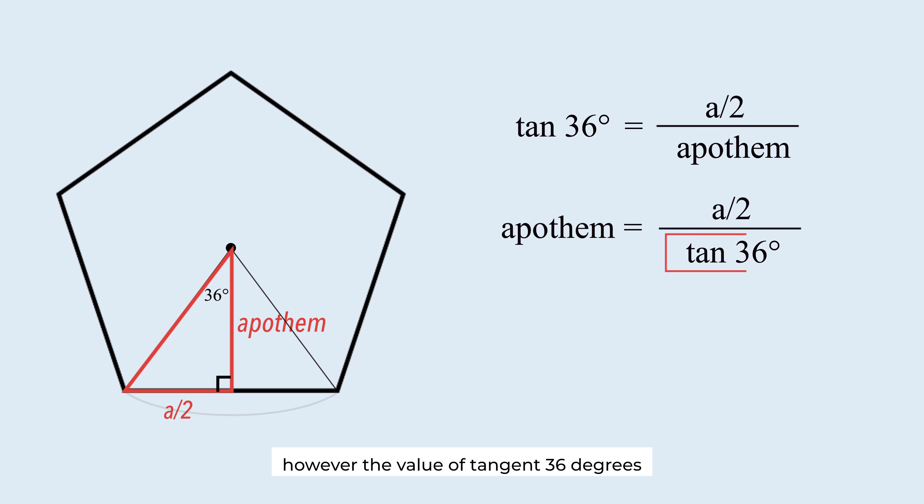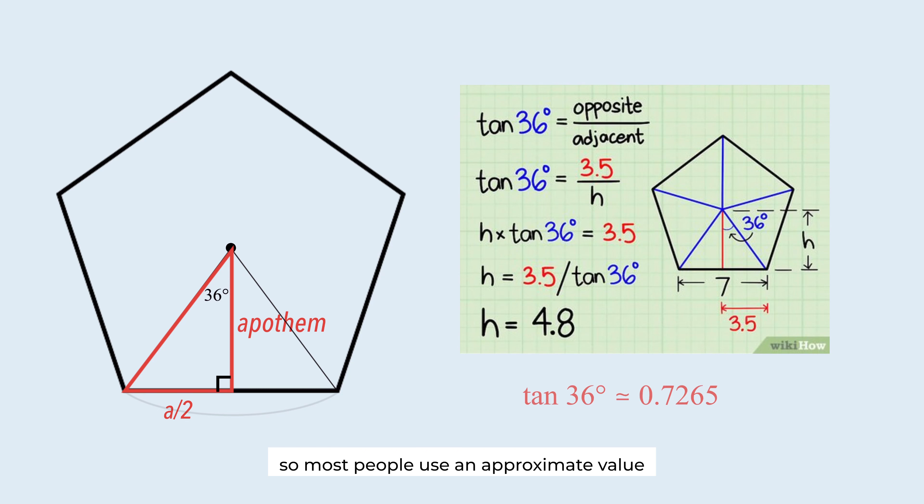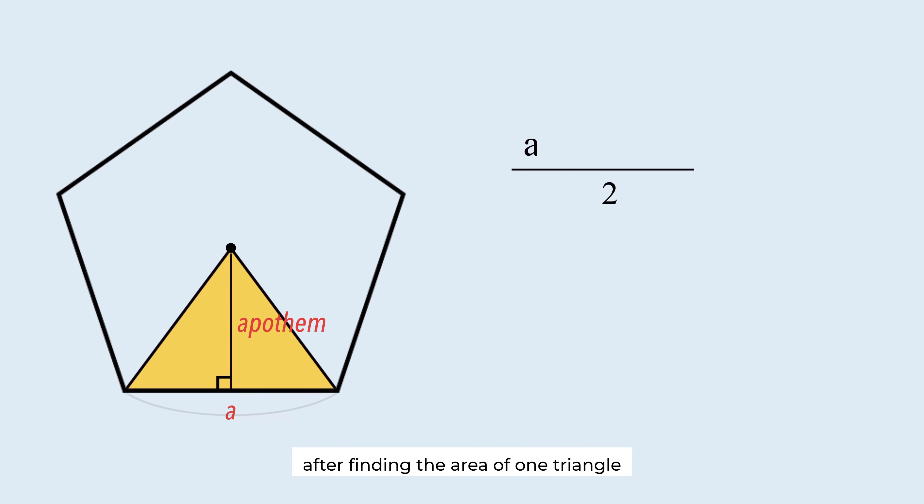However, the value of tangent 36 degrees is actually an irrational number that is an infinite decimal. So most people use an approximate value to solve the problem. After finding the area of one triangle, they multiply the value by 5.